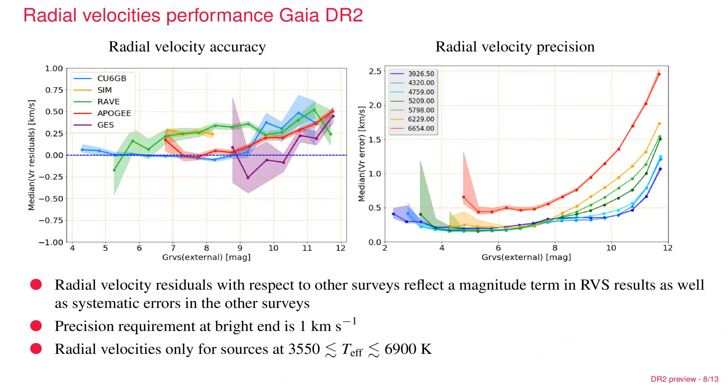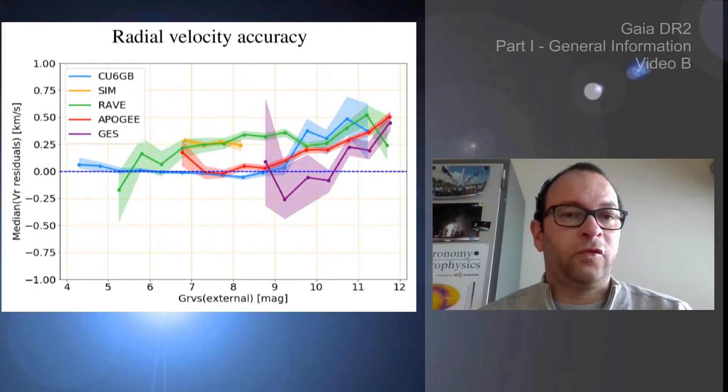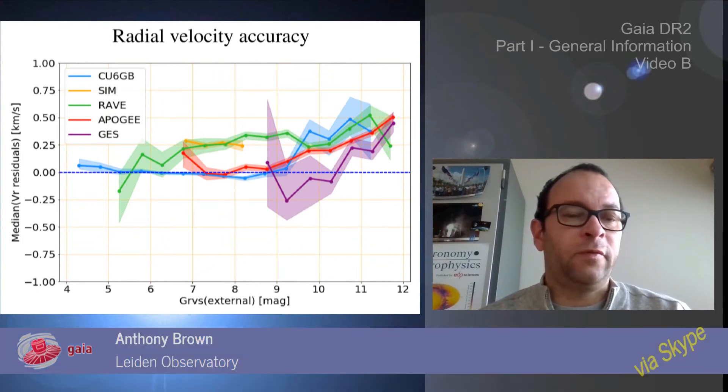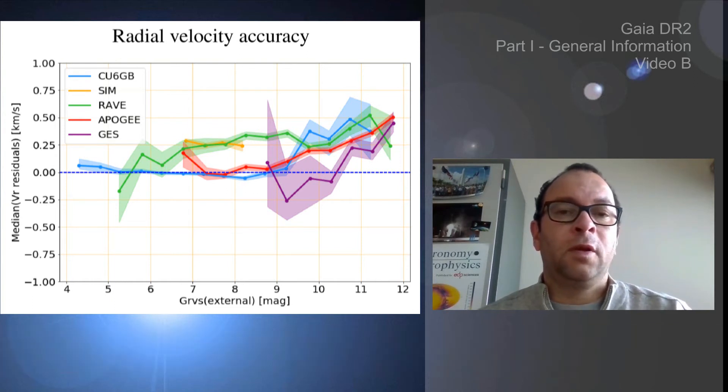The next slide shows a summary of the performance achieved with the radial velocity catalog we're putting out. The panel on the left shows the measure for the accuracy that we achieve by comparing the radial velocities that we derive with radial velocities derived in other surveys, all of them ground-based. One can see that in general, the agreement is very good, of the order of a few hundred meters per second. There is a slight trend towards fainter magnitudes where there is more disagreement.